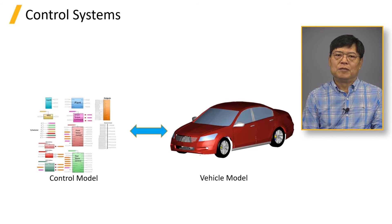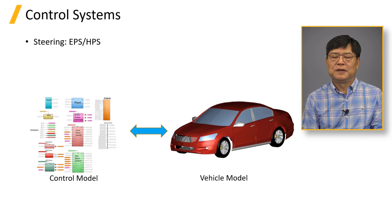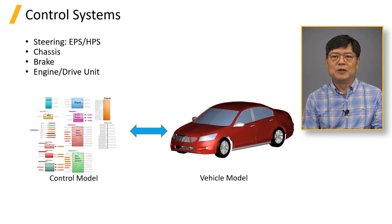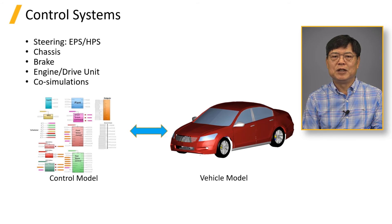Modern vehicles have many control systems — steering EPS, chassis control, brake control, and engine and drive unit control, just to name a few that are associated with vehicle dynamics. More and more control systems are being incorporated into the vehicle system for driver assistance and autonomous driving. The vehicle dynamics model should be able to comprehend such control systems to improve vehicle performance.